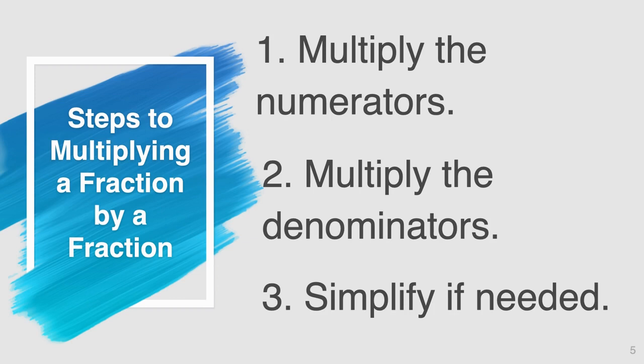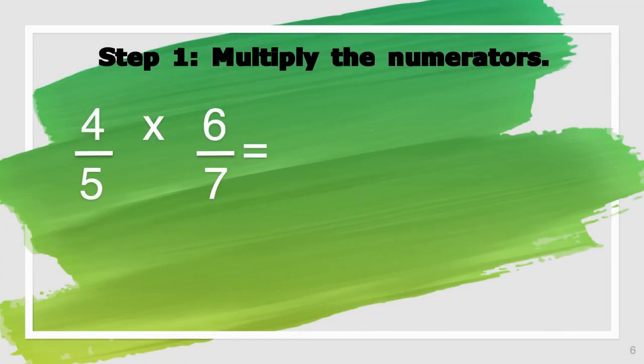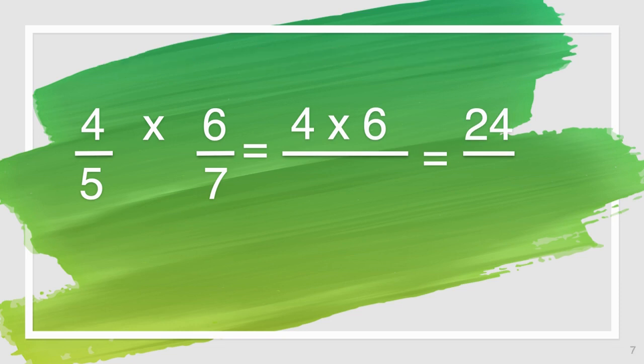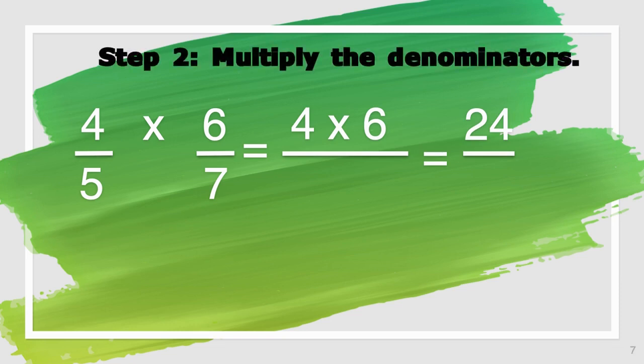Let's apply this now to our previous equation. Four-fifths times six-sevenths. The first step says to multiply the numerators. Four times six is equal to 24. Once we do that, step two says to multiply the denominators. Five times seven is equal to 35.